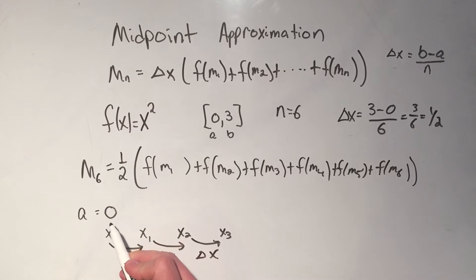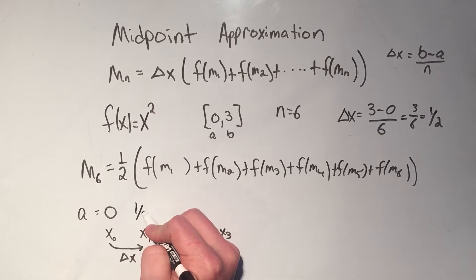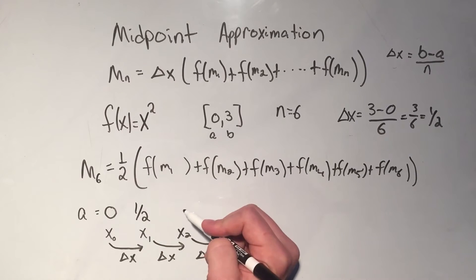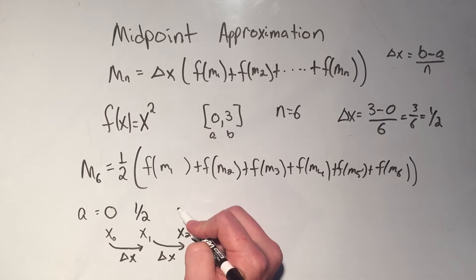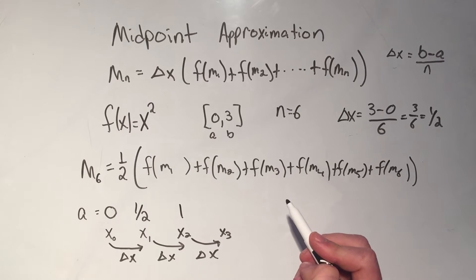Or in other words, these are a jump by 1 half in this case. So to go from 0 to x1, or from x0 to x1, that's 0 plus 1 half. And basically I'm just going to add 1 half each time. So 1 half plus 1 half is 1,